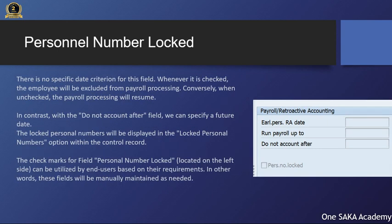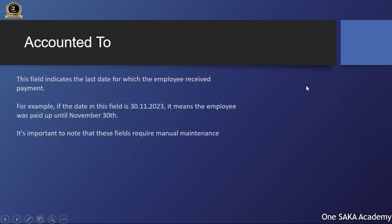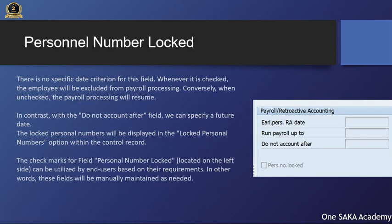Let's understand the 'Personal Number Locked' field. There is no specific date criterion for this field. Whenever it is checked, the employee will be excluded from payroll processing. Conversely, when unchecked, the payroll processing will resume. In contrast with the 'Do Not Account After' field, we can specify a future date. The locked personal numbers will be displayed in the locked personal numbers option within the control record. The checkmarks for the 'Personal Number Locked' field, located on the left side, can be utilized by end users based on their requirements — these fields will be manually maintained as needed.